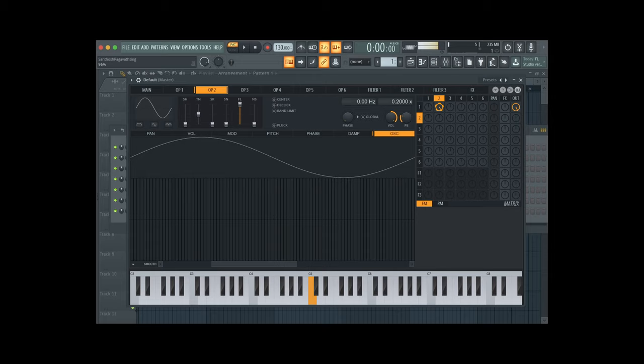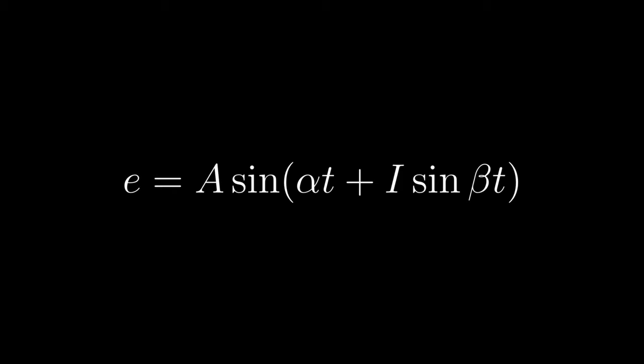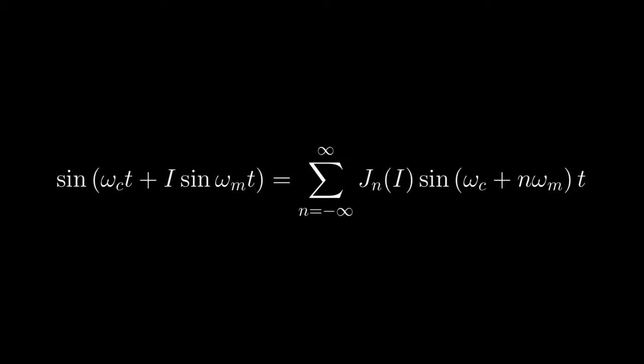This is the equation for the frequency modulated signal. The Bessel equations with order n are used to determine the amplitudes of the carrier and the sideband components. And we can write the frequency modulation formula in terms of the Bessel equation jn.